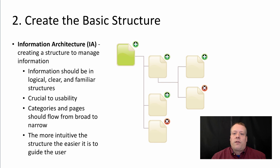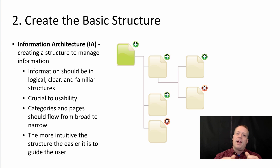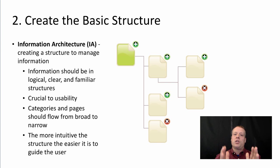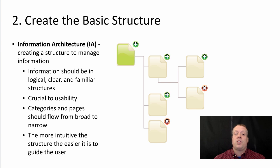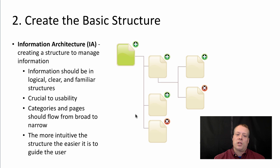So creating the basic structure — you want to create an information architecture. What is an information architecture? It's the idea of putting down, before you design the website, all the content that you want to be in the website in the different places and relating those aspects to each other. It should be a logical, clear, familiar structure. So if, for instance, you have a page about products, you might break them down into categories, and then within those categories have pages of individual products. It's really crucial to usability that you divide your information architecture correctly. You can start to draw out a diagram — we'll talk about some tools to help you do that — and they can help you visualize what that basic structure might look like.